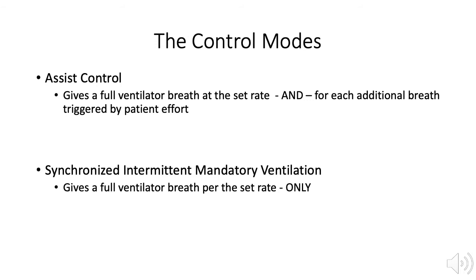Remember that control modes require the provider to set a respiratory rate and determine whether the breath will be delivered using a set tidal volume or a set inspiratory pressure. Even though the provider sets the respiratory rate on the ventilator, it is still possible for the patient to take more breaths than the number set. For example, if the set rate is 10 breaths per minute, the patient may breathe 12, 14, 22, or any other number of breaths greater than the rate the provider sets. How the ventilator responds to each additional patient-generated breath depends on mode options set on the ventilator by the provider.